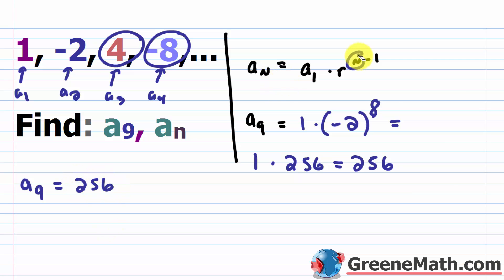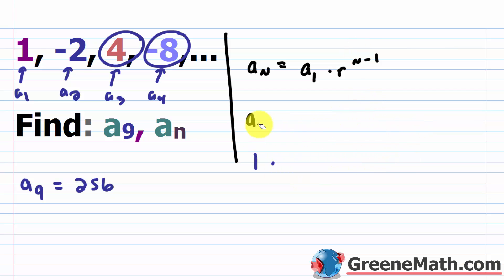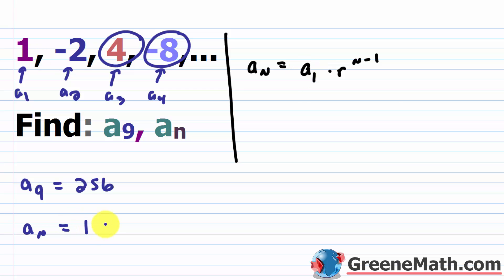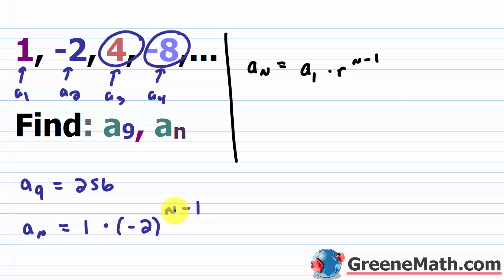For a sub n, some people get confused because you need to plug in values from the specific problem. So a sub n equals a sub 1, which is 1, times your r, which is negative 2, raised to the power of n minus 1. Whatever term you want to find — say the 10th term — plug in 10, evaluate, and you're done.